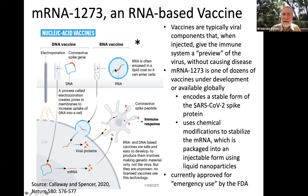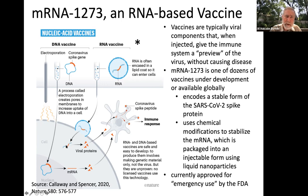Vaccines are typically viral components that, when injected, give the immune system a preview of the virus without causing disease. One thing about the mRNA present in the nanoparticle is that the process uses chemical modifications to stabilize the mRNA. These modifications actually allow the body to launch a proper immune response — if you didn't modify the mRNA, bad things would happen and the response would not be appropriate. That technology was developed in part by a scientist at the University of Pennsylvania, who did a lot of research on RNA modifications that allow mRNAs to be used as a basis for a vaccine.